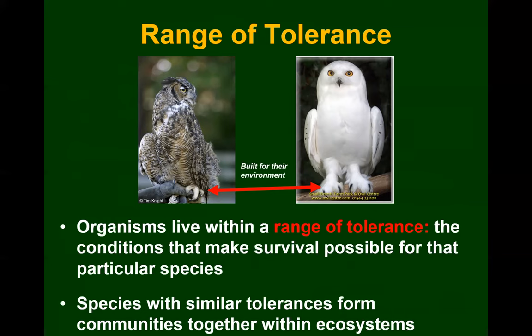A good example would be these two owls in the same genus Bubo — the great horned owl and the snowy owl. They're very closely related but built for their environments. The great horned owl is found in the lower United States, well below Canada. The snowy owl lives from Canada up through the tundra and Arctic. Snowy owls hunt rodents on the ground where there's lots of snow, so they have feathers on their feet to stick into snow to grab prey. Great horned owls don't need that as much, so they don't have it. A snowy owl can tolerate far colder temperatures because it's adapted to those conditions.